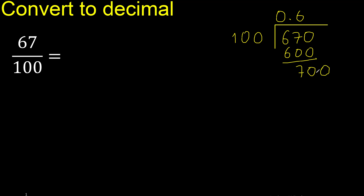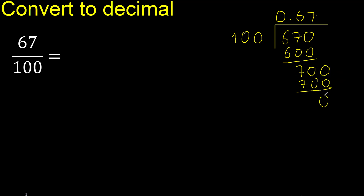Point is here. 700 — 100 multiplied by which number: multiplied by 7 is exact, 700. Subtract is 0. That is not a number, and 0, therefore finish.